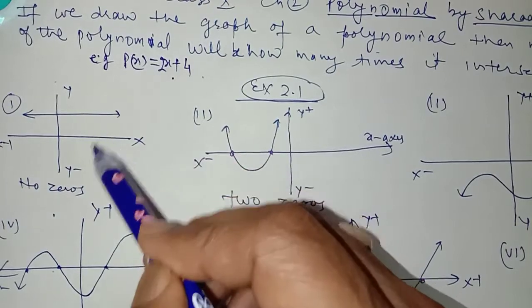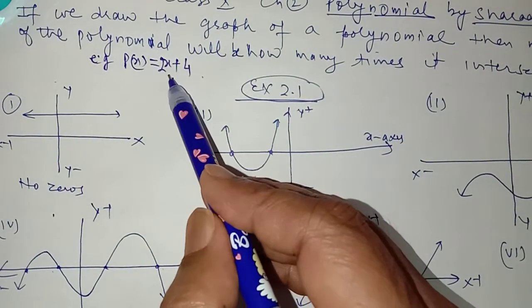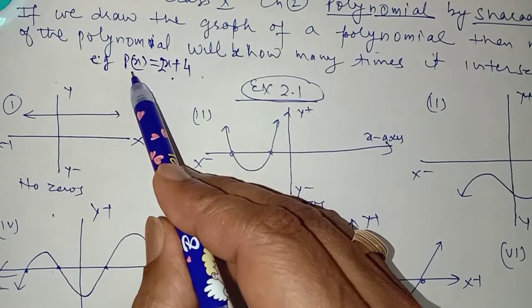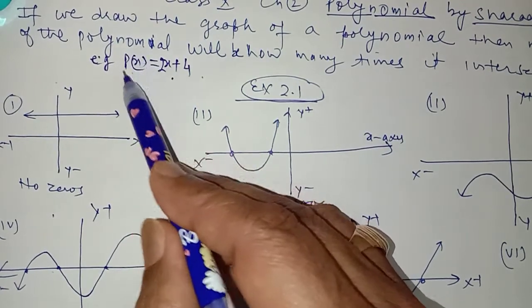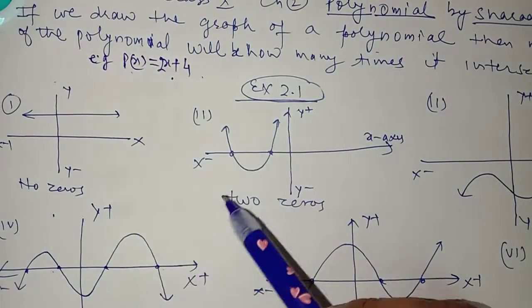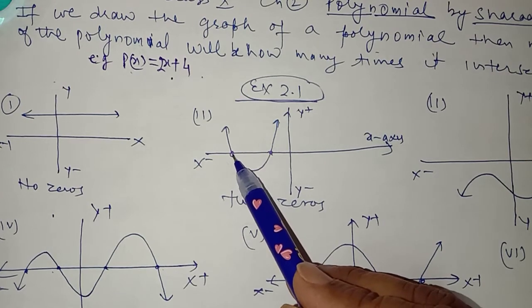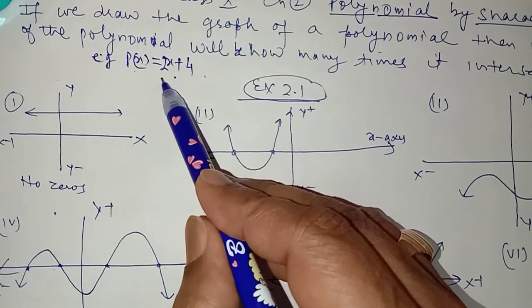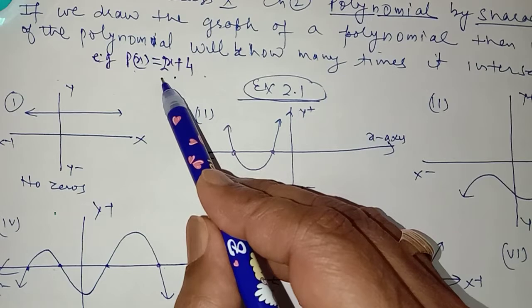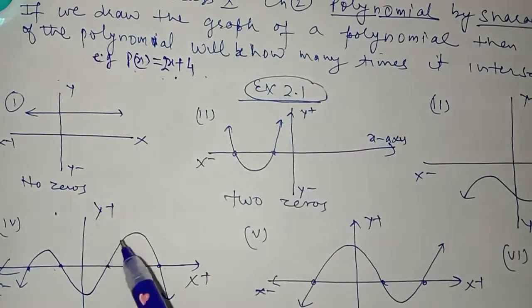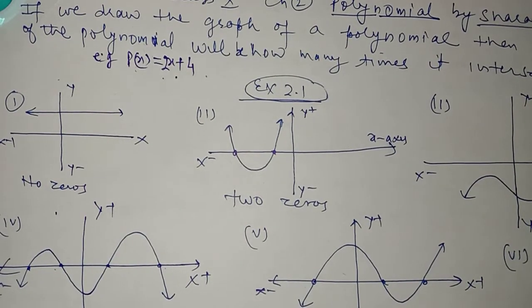The zeros are obtained graphically by the number of times the polynomial intersects the x-axis, because on the x-axis p(x) will be equal to zero, or y will be equal to zero. We obtain the zeros of the polynomial by putting it equal to zero. y equal to zero means the x-axis. So the number of zeros of the polynomial is obtained by how many times it intersects the x-axis. This is a basic concept for the first exercise and it is very easy.